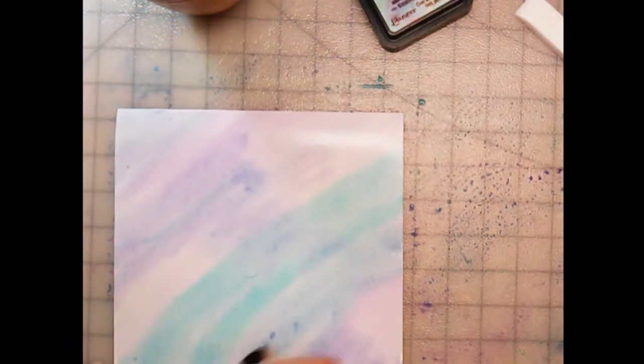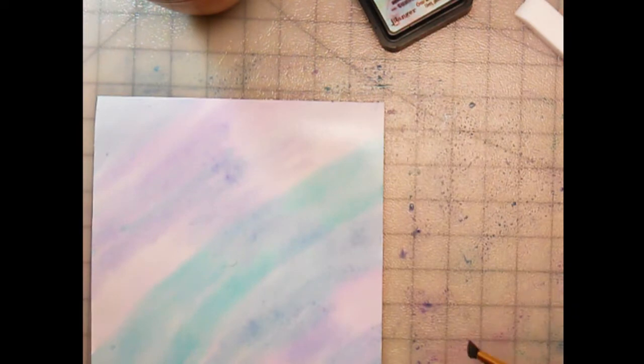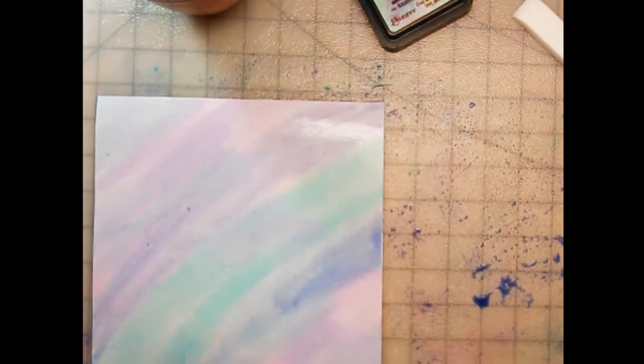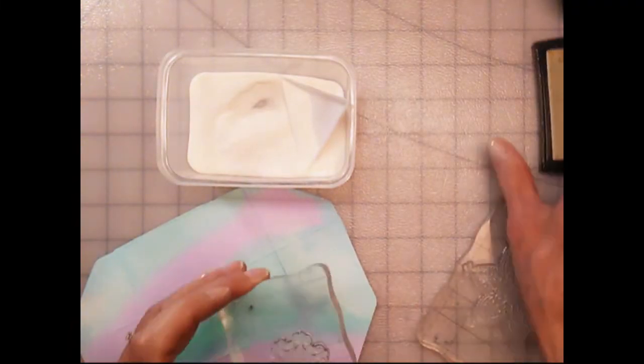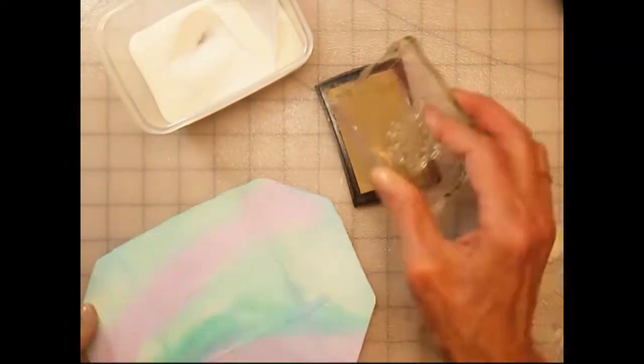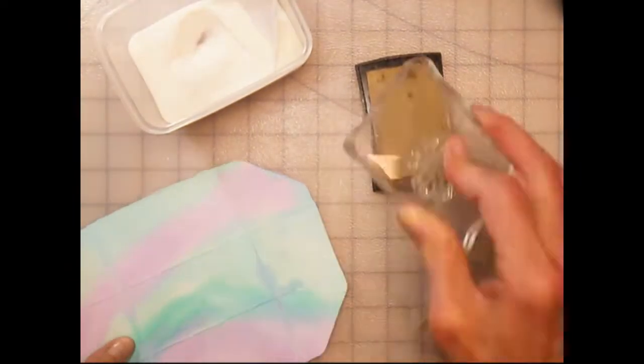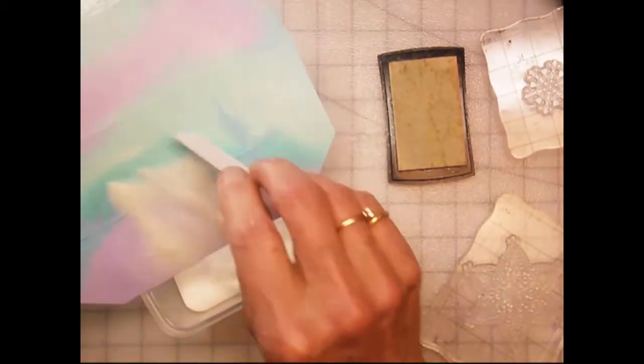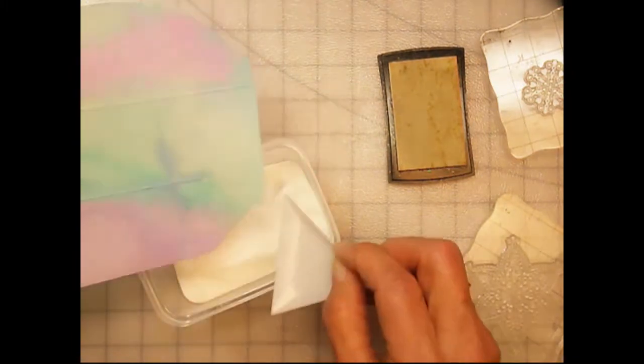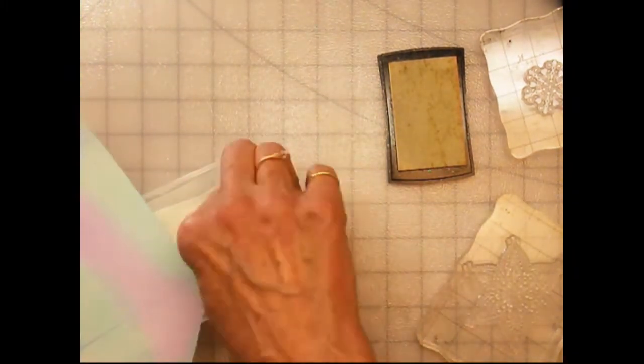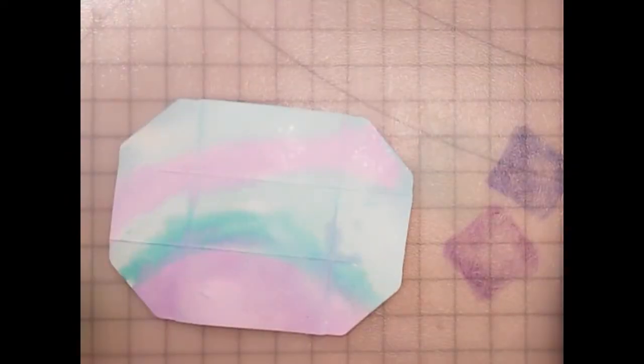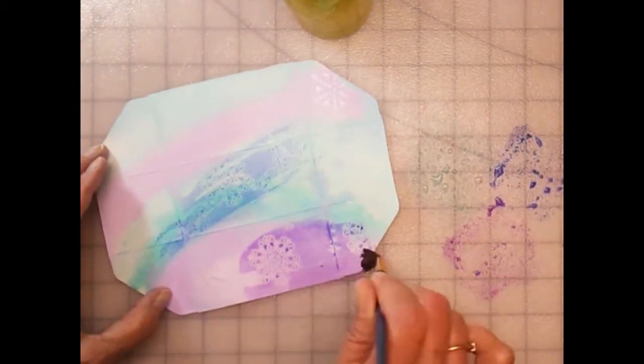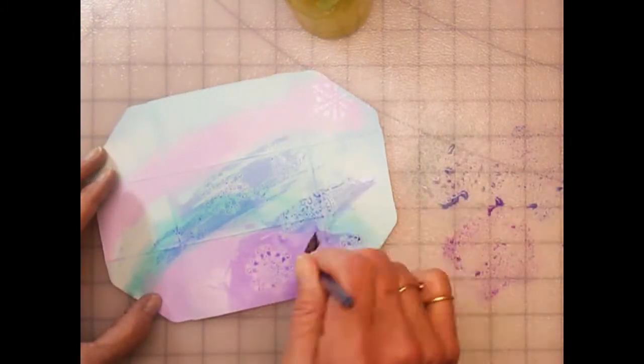Just continuing to color the background here. When I'm done I'm going to dry it and then actually emboss the snowflakes on top. This is demonstrating adding the snowflakes to a background that has been watercolored on watercolor paper. I am using clear embossing powder because I want the color underneath to show through.